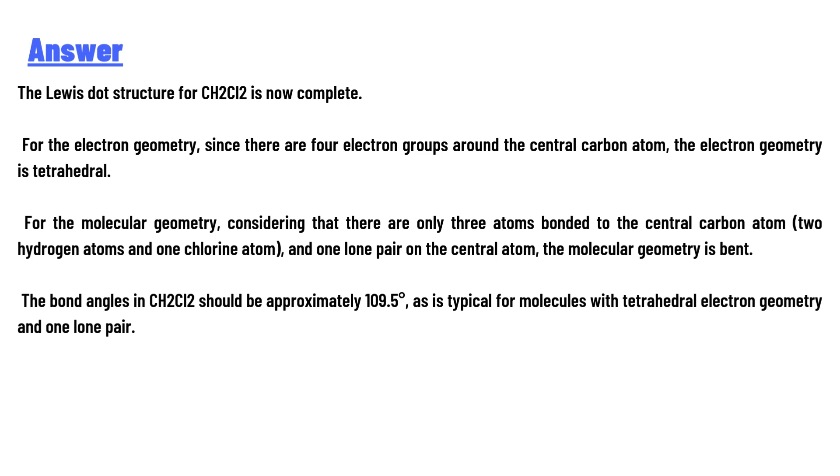For the electron geometry, since there are four electron groups around the central carbon atom, the electron geometry is tetrahedral.